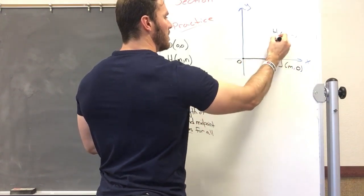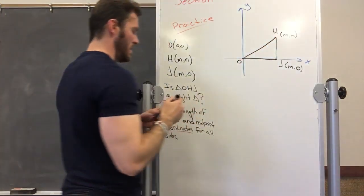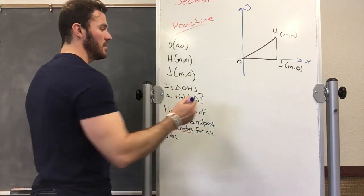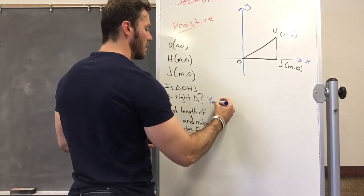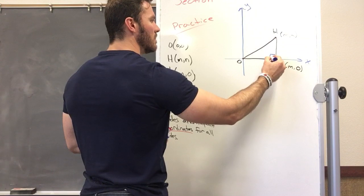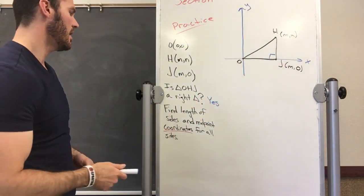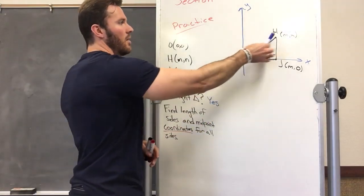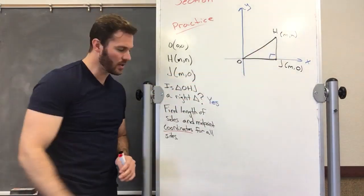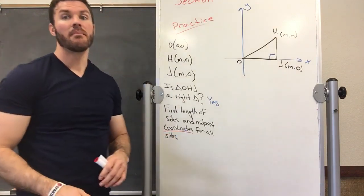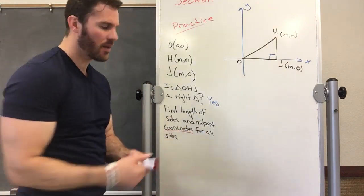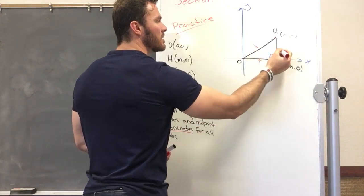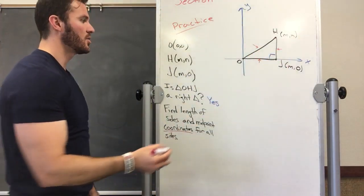Is that triangle a right triangle? Yes it is. We got a right angle. Now it says find the length of all the sides and the coordinates of the midpoints. So everywhere we go halfway, we need to find the coordinates. We've got OJ, JH, and HO.